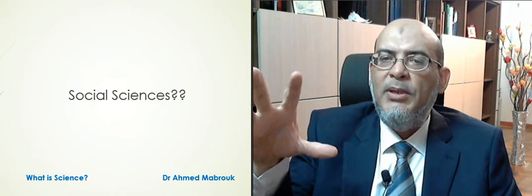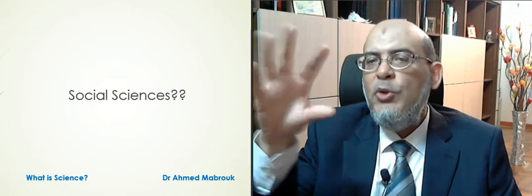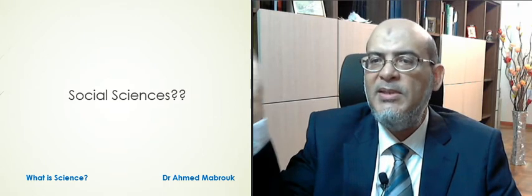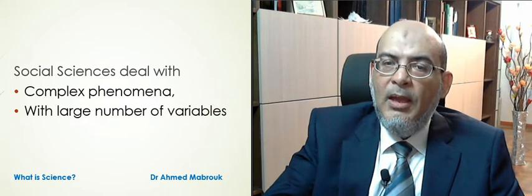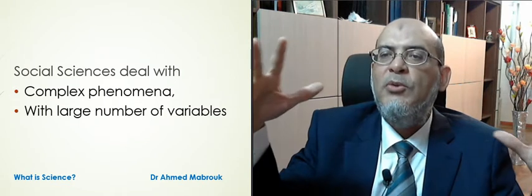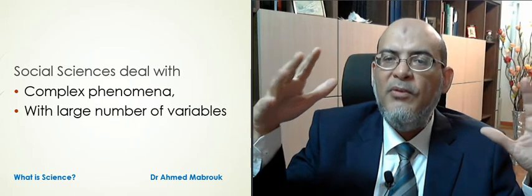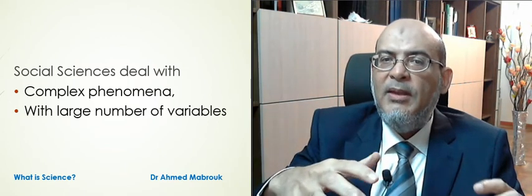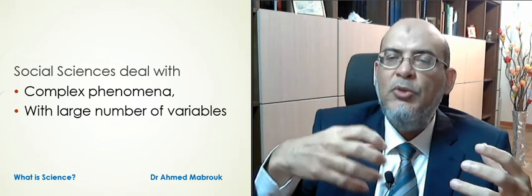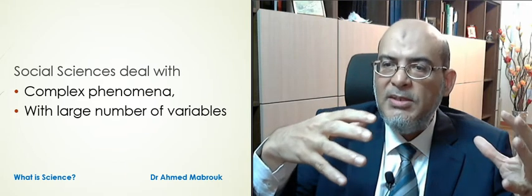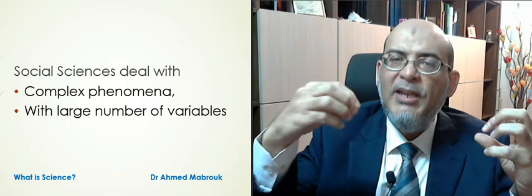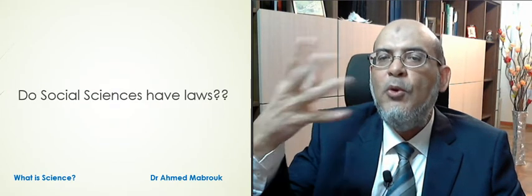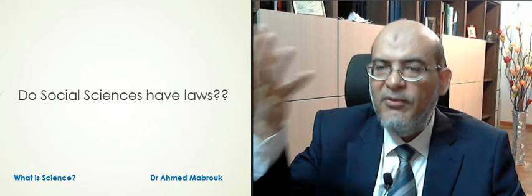Now let's make a bigger jump and move to the social sciences. You will see not one difference but so many differences between the social sciences and the natural sciences like physics, chemistry, and biology. Social sciences actually deal with very complex phenomena, and these complex phenomena usually involve very large numbers of variables. Because of that, social sciences are statistical in nature — they don't apply to every case. That's what made some philosophers of science even question whether social sciences have laws at all.